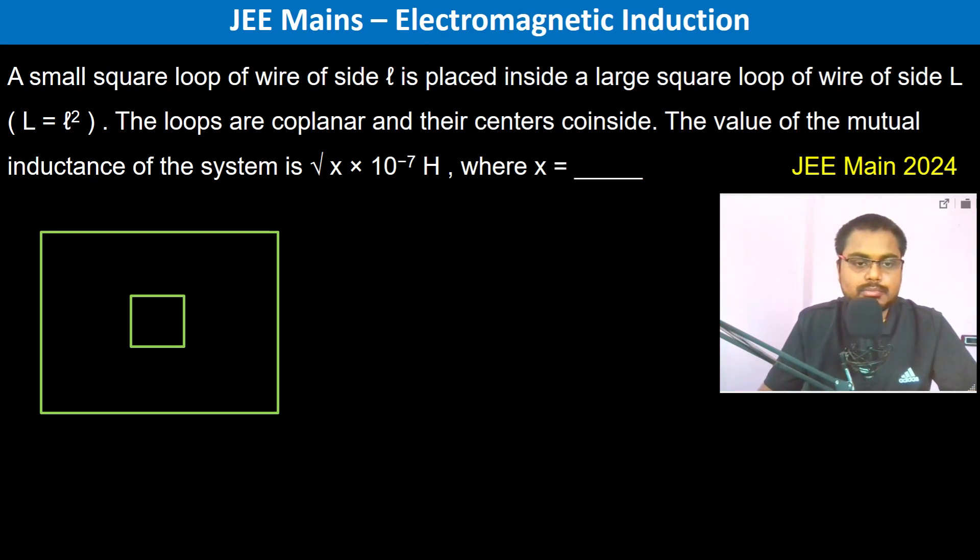A small square loop of side small L is placed inside a big square loop of side big L. This big L is equal to L squared, which is stated. Now let us have current passing through this big loop.